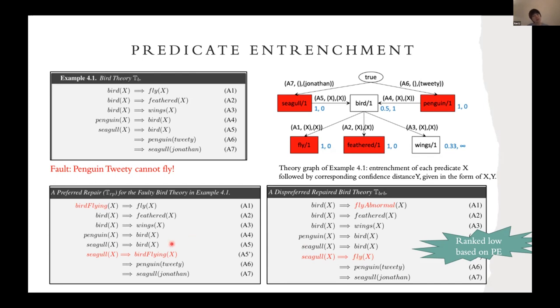In this case, the left one is a better repair. If we think about how we rank these two repairs based on the entrenchment, we can see the left one is ranked higher because bird is the less entrenched predicate and fly is a more entrenched one. So the left one is ranked on the top, which is the desired result.